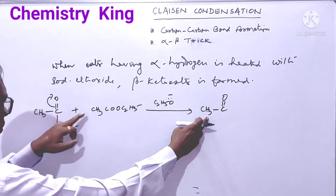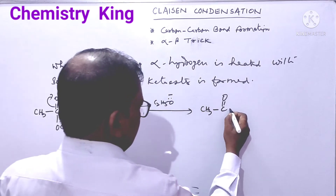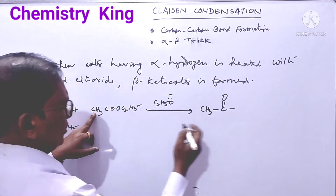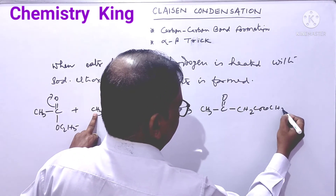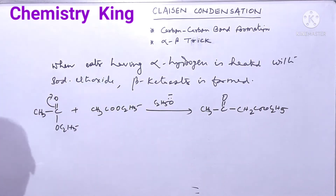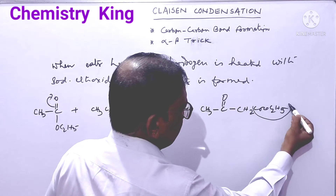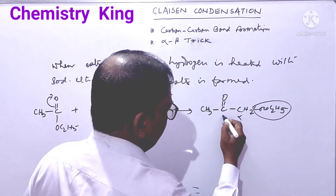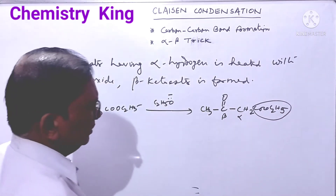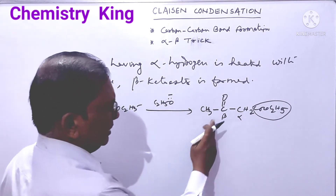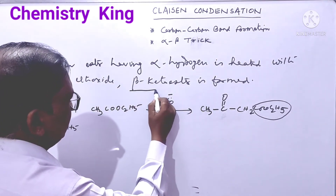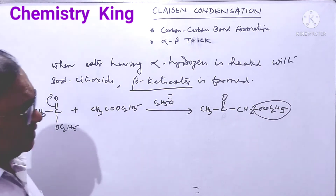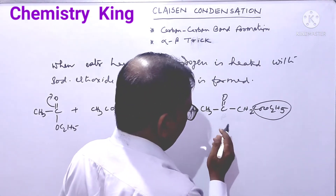So you get CH3, C double bond O, and this unit — CH2 — gets attached here, with OC2H5. This product you will get. It is a beta-keto ester. It is alpha-carbon and beta-carbon.